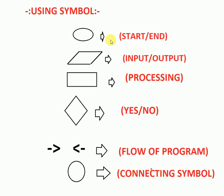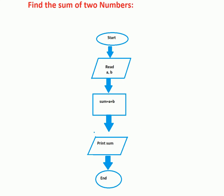Now I am going to discuss an example of a flowchart — how to write it. Example: find the sum of two numbers. Start with the start symbol, then use the input symbol for inputting two numbers, then the processing symbol for the calculation, then the output symbol for the result, and finally the end symbol. The start and end symbols are the same shape.